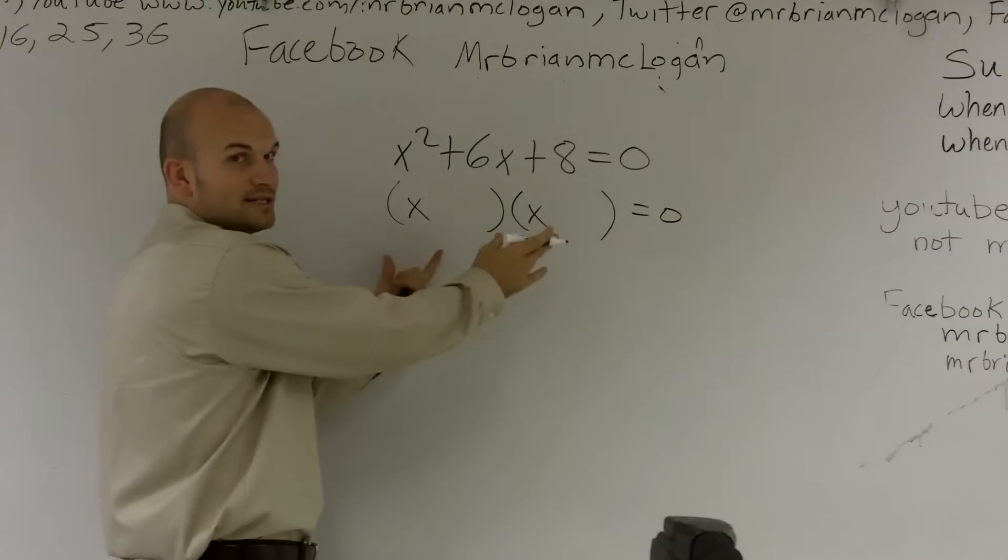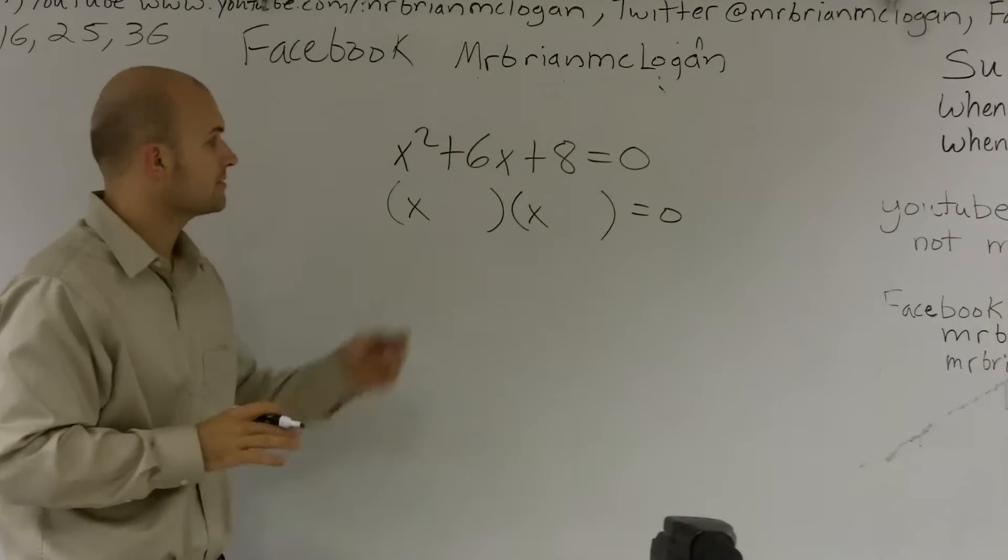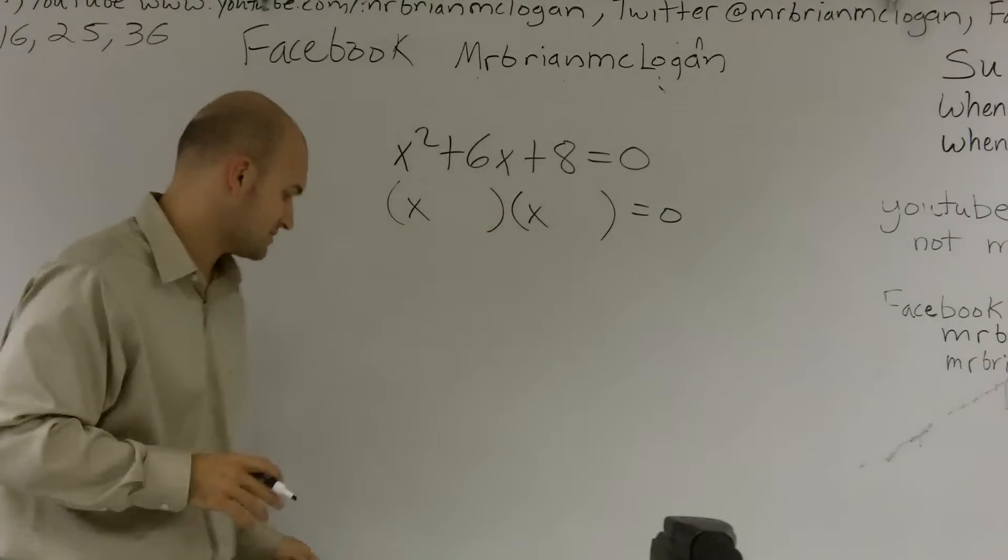Because if you know that one of these equals zero, then what you'll be able to do is set each one of them equal to—you'll be able to set them both equal to zero and solve.